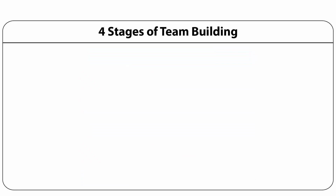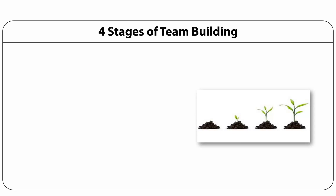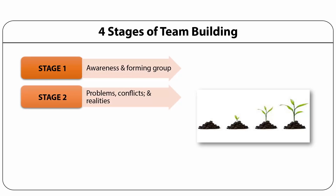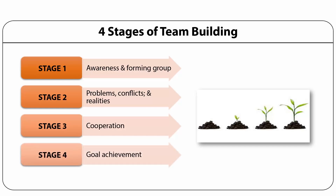There are many stages to build a team, and in each stage basic orientations are to be induced to the team members. The basic orientations are orientation to goal and tasks, and orientation to people and relationships. Let us look at the four stages. Stage one: building awareness and forming the group. Stage two: facing problems, conflicts and facing the realities. Stage three: cooperation. Stage four: concentrate on goal achievement.